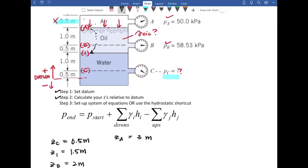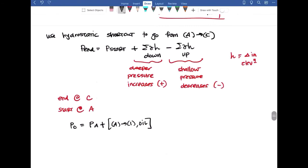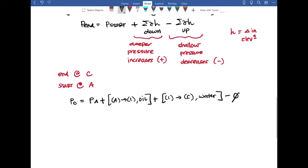The next move, so now we're here and I want to get to C. So we're going from one to C down. So we have a plus sign and we have a plus sign. We're going down one to C down. So plus one to C, but now we're in water and that's it. We don't have any ups, so we just say we're done. No ups.